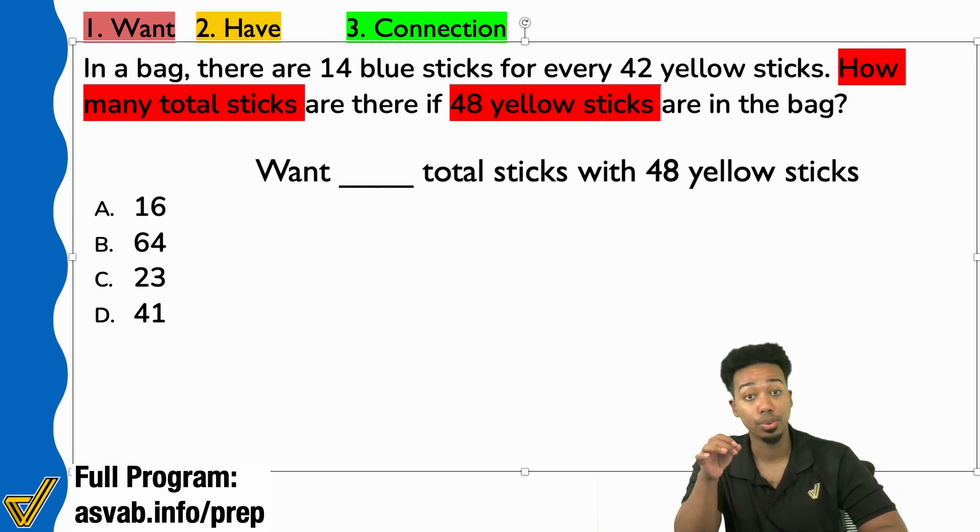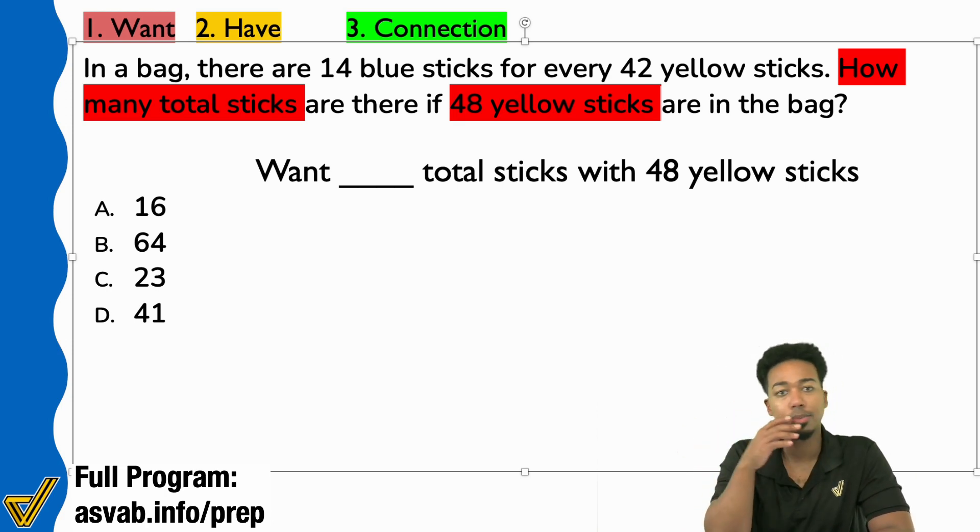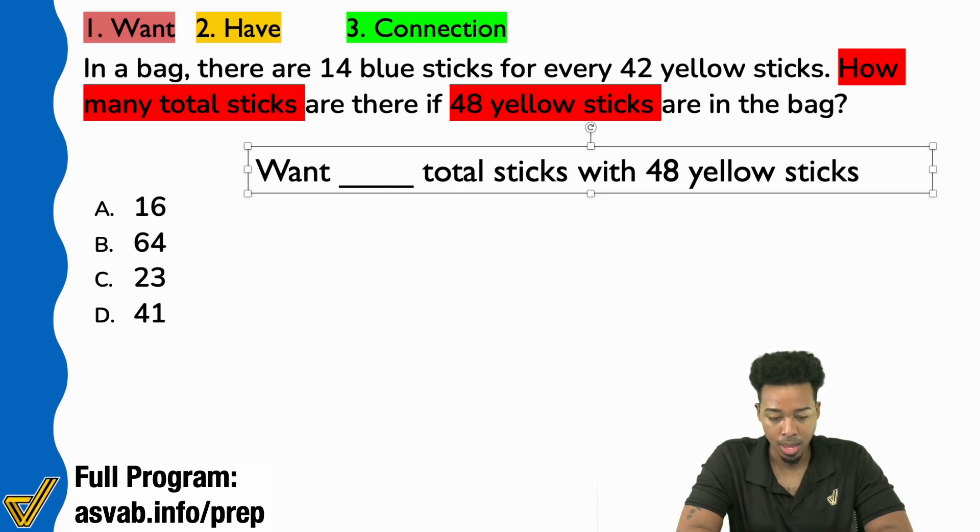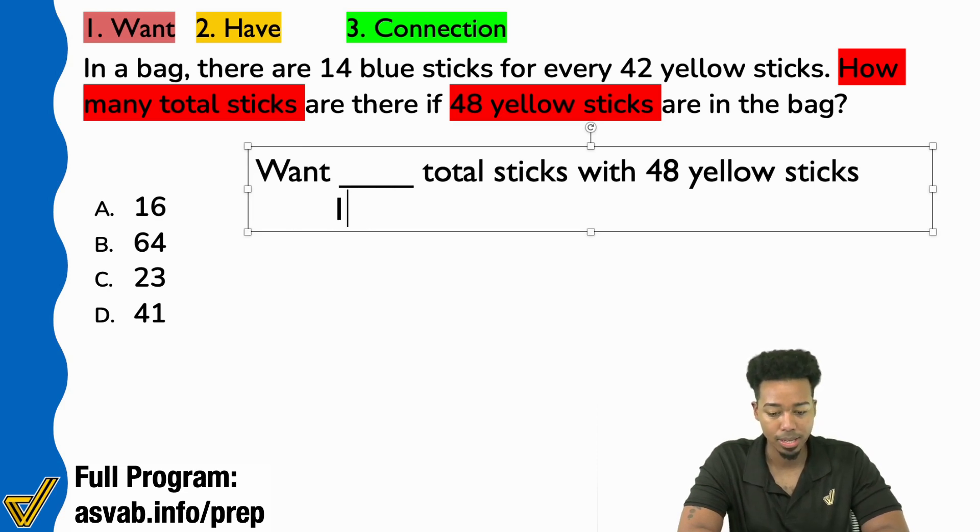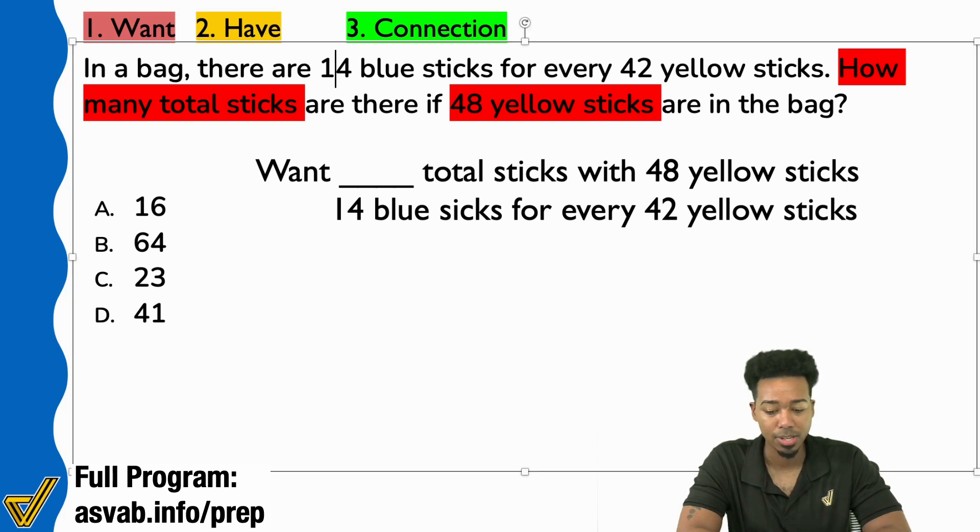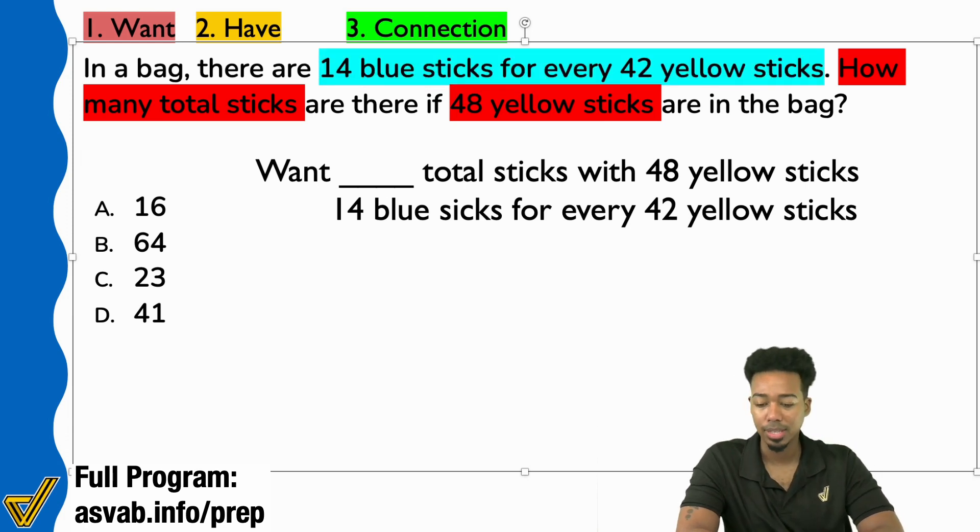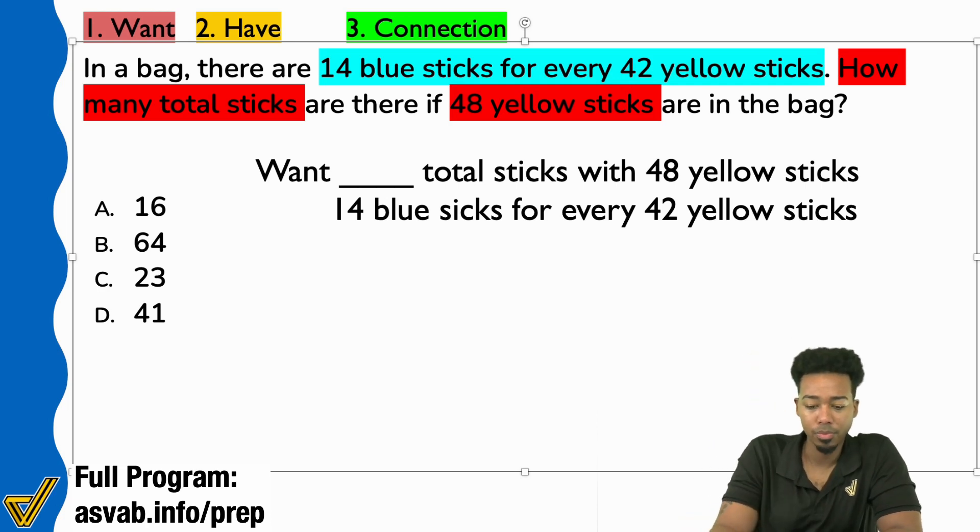So here's what we're going to do. We're going to point out the information that's given to us, because I think it's going to be surprising that for those of you that got A, how close you were to getting the right answer. In the next sentence here, we're going to write the information they gave us. They gave us 14 blue sticks for every 42 yellow sticks. Were you guys able to write that piece of information down? 14 blue sticks for every 42 yellow. Okay, great.